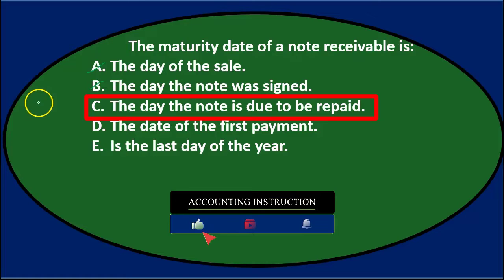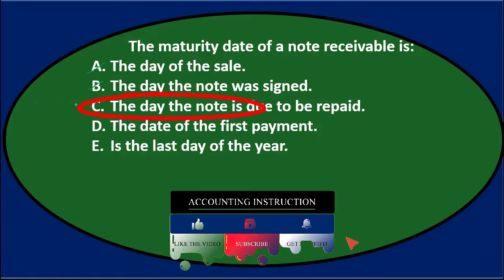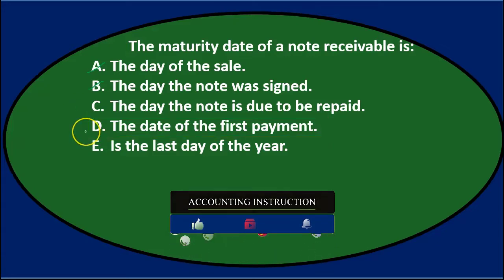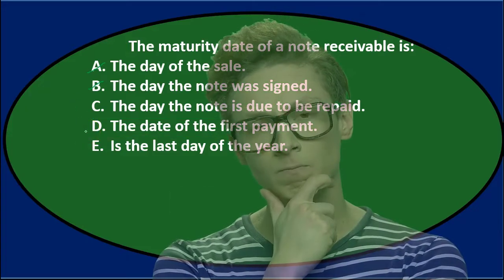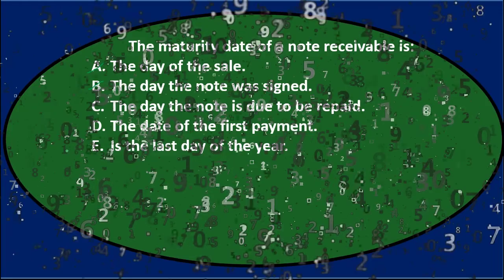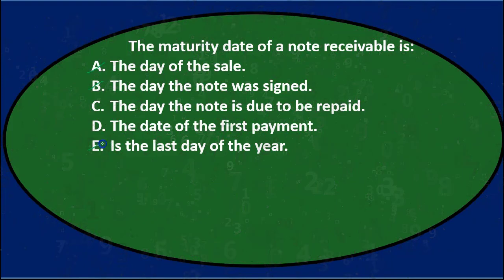C, the day the note is due to be repaid — that's the end of the note, and that seems more reasonable as a term for maturity. D, the date of the first payment — you might think that is a kind of maturity, but it hasn't fully matured because the note is still ongoing. E, the last day of the year — that's arbitrary and doesn't necessarily apply. So I'll keep C and D.